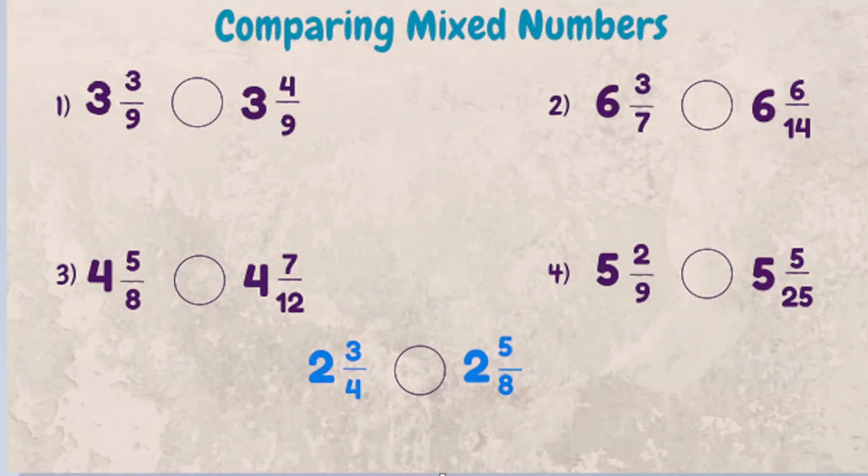In this video, we're going to talk about how to compare mixed numbers. When you're comparing two mixed numbers, the first thing you want to do is look at the whole number. If the whole numbers are different, the one that's larger is the larger mixed number. If you have two mixed numbers and the whole numbers are the same, what we need to do next is just isolate the proper fraction portion and evaluate that way.